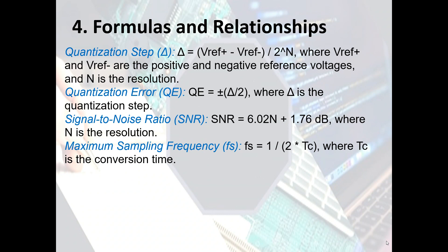Here are the commonly used formulas. The quantization step delta equals (V_ref+ minus V_ref−) divided by 2^n, where V_ref+ and V_ref− are the positive and negative reference voltages and n is the resolution. Quantization error Q equals plus or minus delta over 2. The SNR formula is: SNR = 6.02n + 1.76 dB, where n is the resolution. The maximum sampling frequency fs equals 1 divided by (2 × Tc), where Tc is the conversion time.